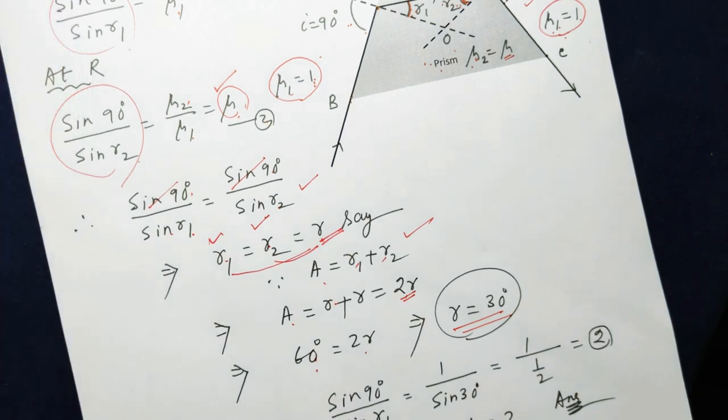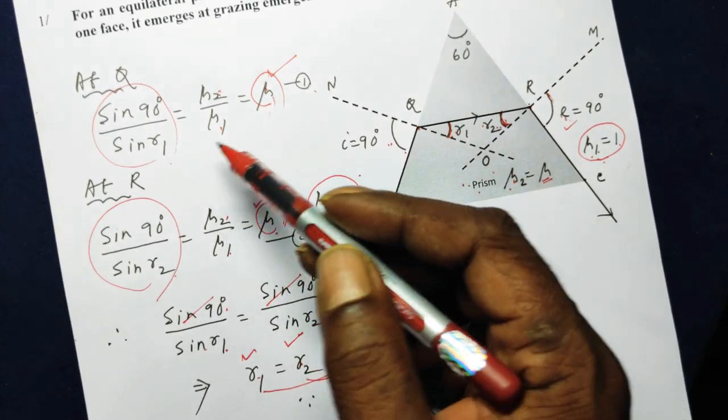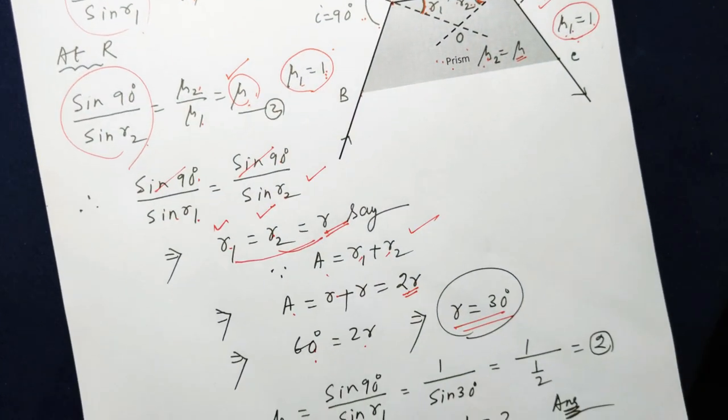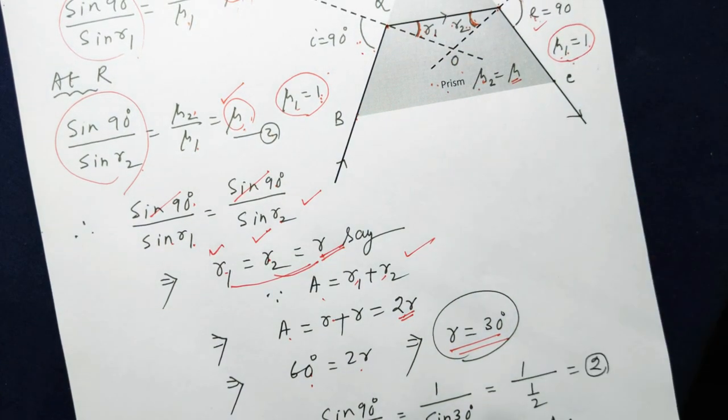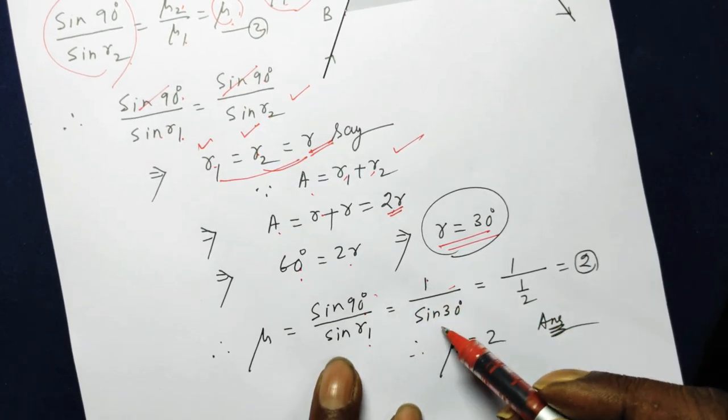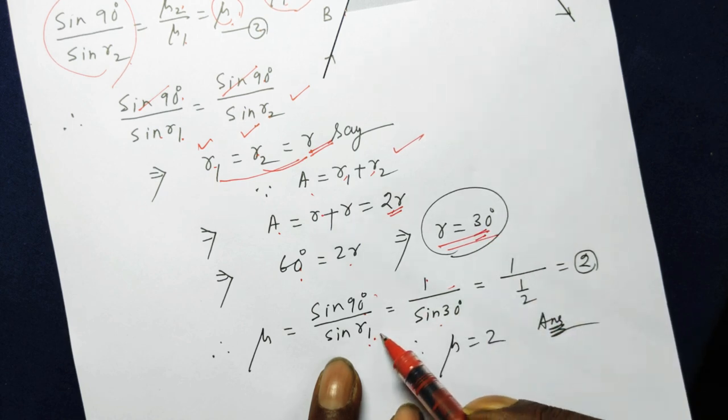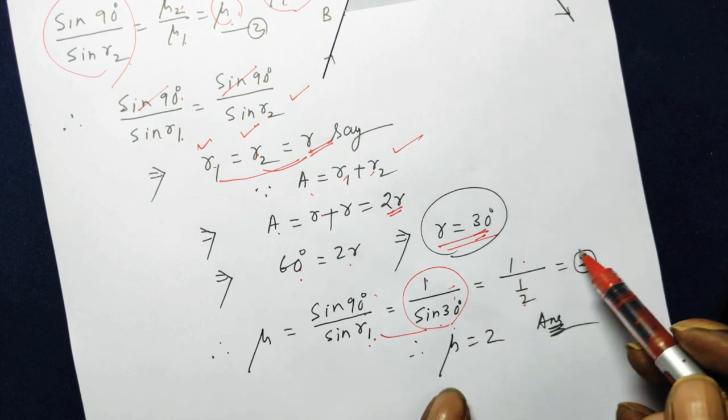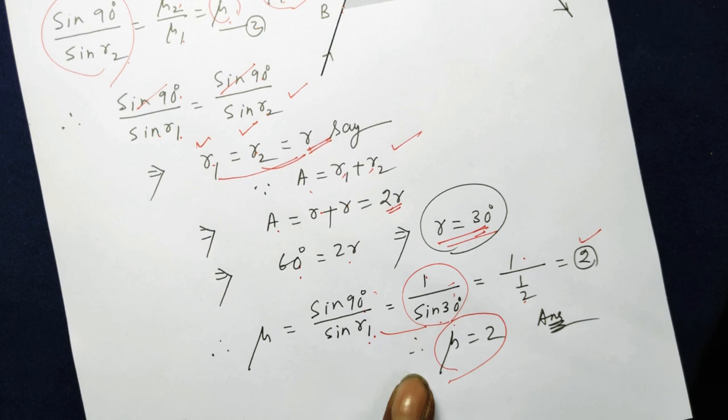Since we have found out R, and therefore, either you apply the Snell's law here or here to find out the mu. So if you apply it here, so sin 90 over sin R1, sin 90 over sin R1, sin 90 is 1 over R1, which is equal to R, which is just found out as 30 degrees. So sin 30, sin 30 is 1 over 2, 2 comes to the numerator, so it becomes 2.